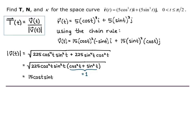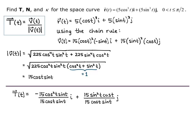So now the unit tangent vector equals negative 15 cosine squared of t sine of t divided by the magnitude of velocity, 15 cosine of t sine of t, for the i component; and 15 sine squared of t cosine of t divided by 15 cosine of t sine of t for the j component. When I simplify this, it becomes negative cosine of t i plus sine of t j. There's my unit tangent.